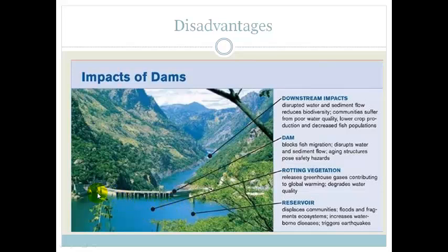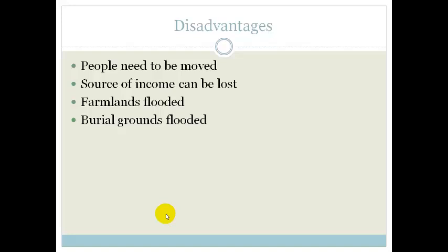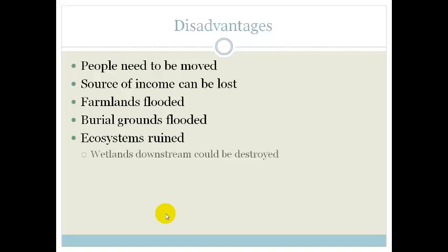Sometimes — actually quite a lot of the time — in order to build the dam they have to displace communities and flood ecosystems to make up the water. Also, as is true for the Katze Dam, sometimes the water pressure from such a huge volume of water can actually cause earthquakes or cracks in the earth's surface. So people need to be moved, the source of income can be lost, farmlands can be flooded, and burial grounds can be flooded, which is actually incredibly important.